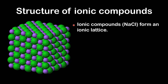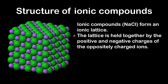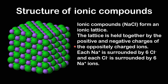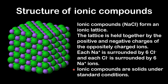Next we'll have a look at the structure of ionic compounds. Ionic compounds such as sodium chloride form an ionic lattice. Here we can see an example of an ionic lattice, with the sodium ions colored purple and the chloride ions colored green. The lattice is held together by the positive and negative charges of the oppositely charged ions. Each sodium ion is surrounded by 6 chloride ions, and each chloride ion is surrounded by 6 sodium ions. Ionic compounds are solids under standard conditions.